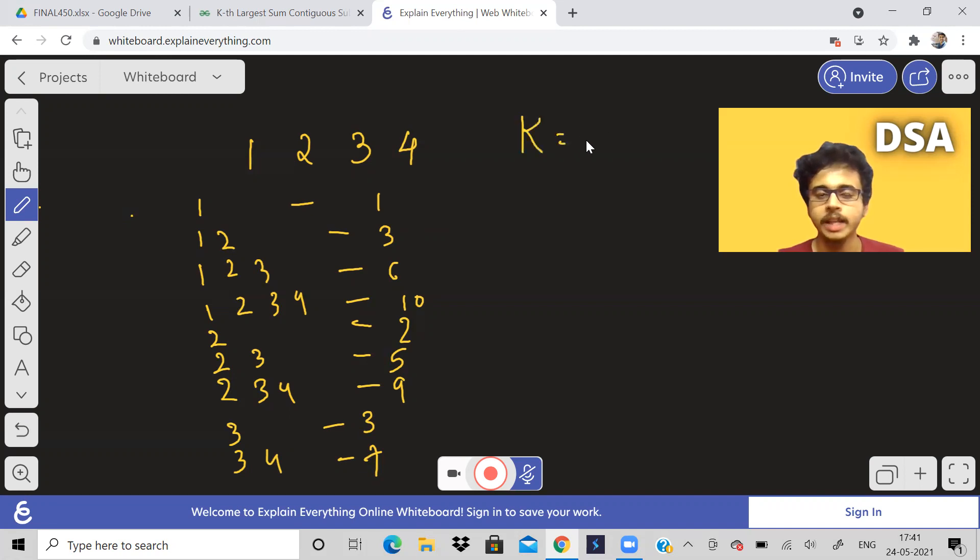Now out of all these sums, if I say I want to find out kth largest, suppose k equals 4, what is the fourth largest? You should arrange them in decreasing order: 10, 9, 7, 6. The fourth largest will be 6. This is what they are asking, return this answer.